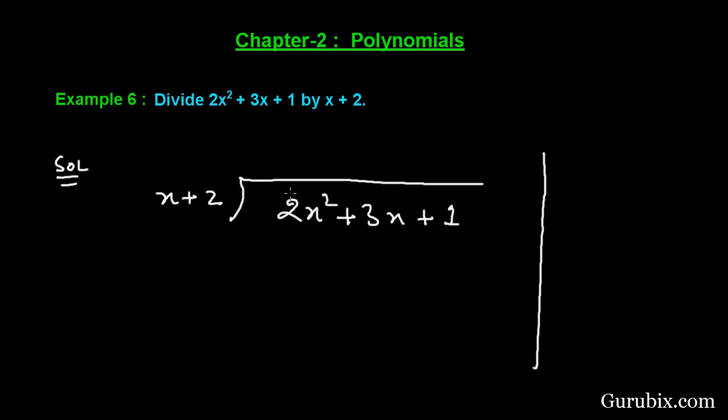To find the first term in the quotient, we shall divide the first term of the dividend polynomial. This means we have to divide 2x square by the first term of the divisor, which is x. Then we get 2x. This means the first term of the quotient is positive 2x. Now we shall multiply x plus 2 with this 2x and write here. This will be 2x square, and if we multiply 2x with 2, then we get 4x.